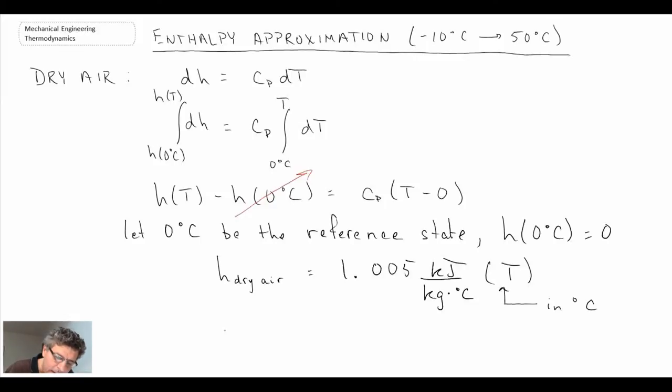Consequently, we can then evaluate the change of enthalpy of dry air as 1.005 delta T, and the units of that would then be kilojoules per kilogram. So that's an approximation that we will be making for dry air. Let's proceed on and take a look at how we can deal with the water vapor.